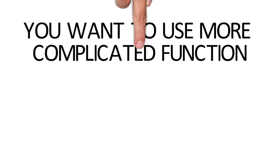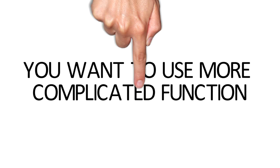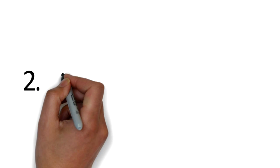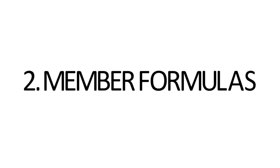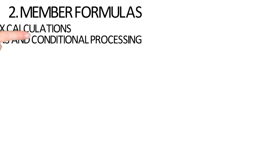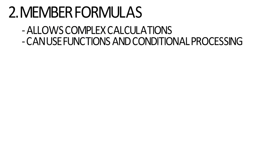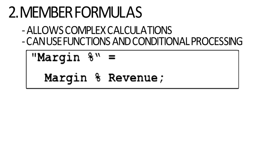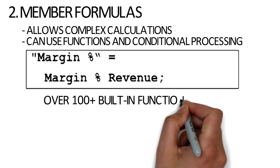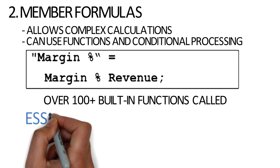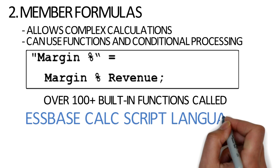But at times you want to use a more complicated function — we call these member formulas. A member formula can be something that looks like a unary operator, meaning using the plus, minus, times, divide, or percent sign, or it can be something using over 100-plus built-in functions in what's called the S-Base CalcScript language.